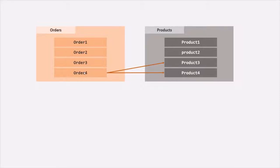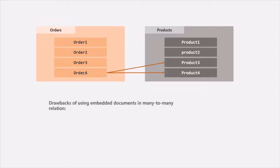When we have a many-to-many relationship between two collections, it's always recommended to use references, because there are several drawbacks when we use embedded documents. The first drawback is the 16 MB size limit of the overall document can be exceeded. In a single order, the customer might have purchased multiple products, so when we use embedded documents, that order document will also contain multiple product documents, which can push it past the 16 MB size limit.